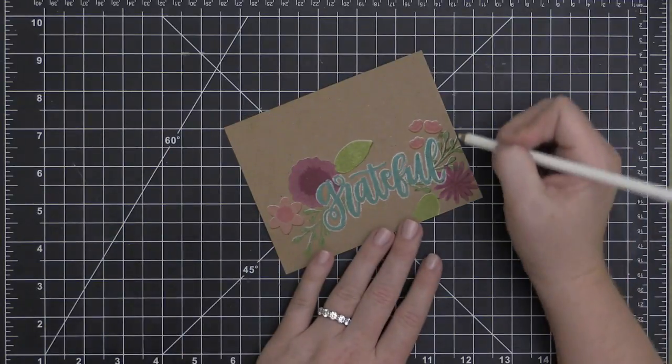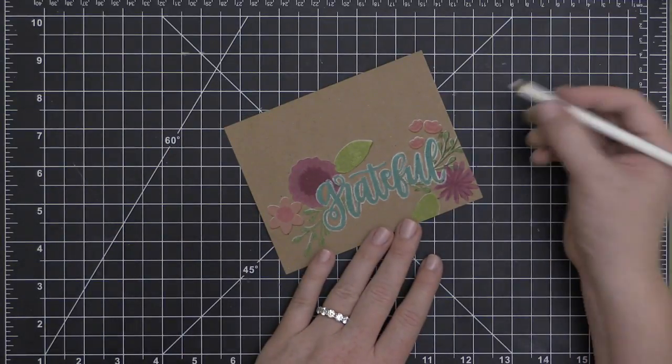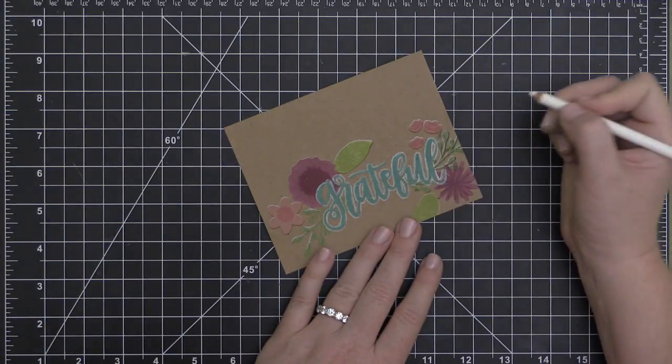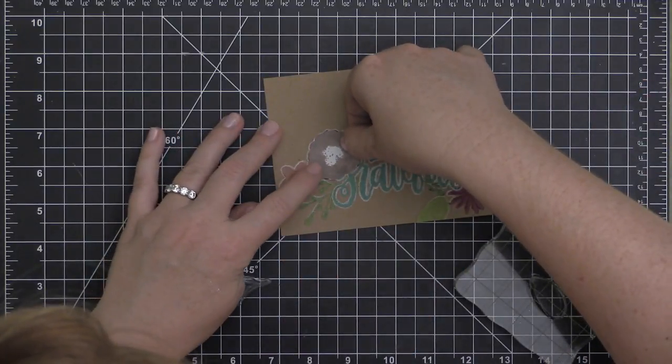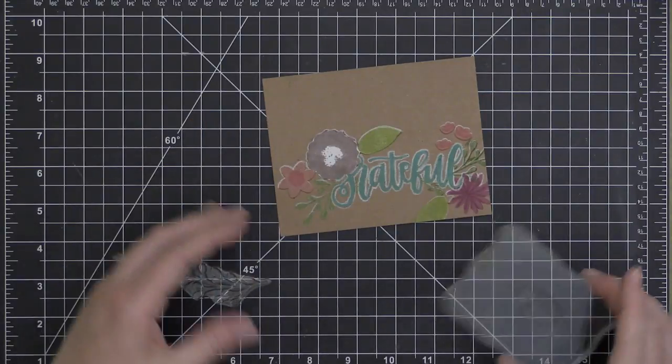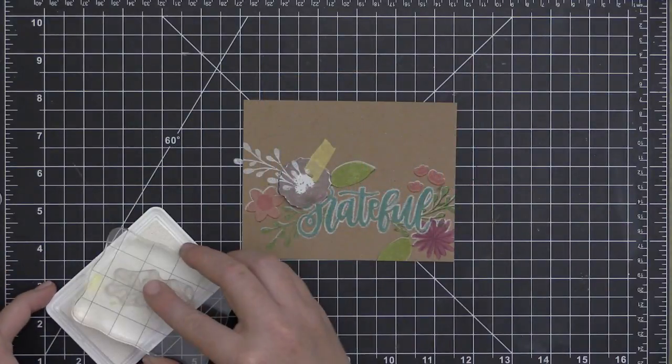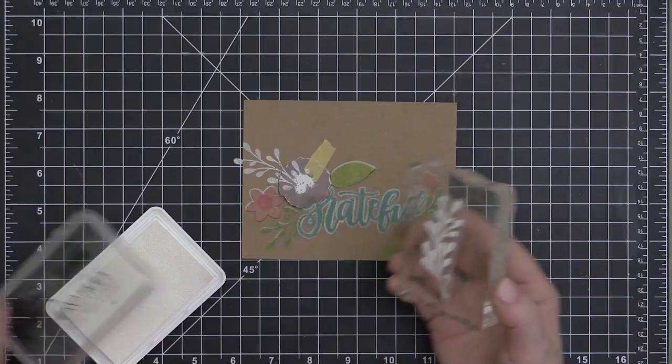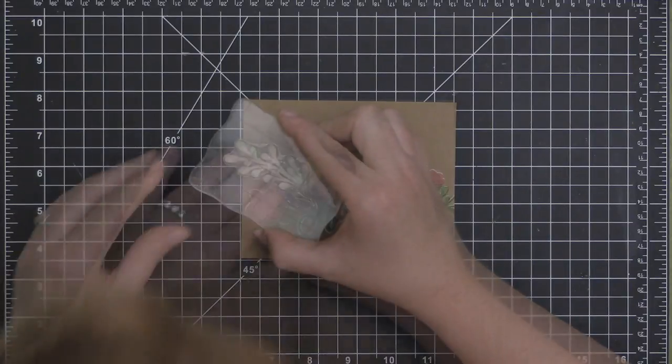I ended up really liking this effect because this craft cardstock has so much tooth to it, this almost ended up looking like chalk on top of this craft cardstock and I love the way it made that sentiment really jump out.